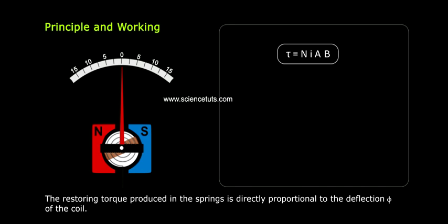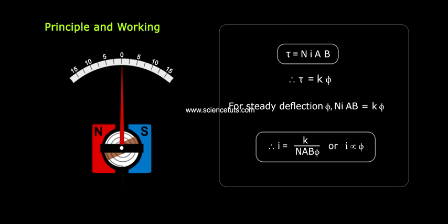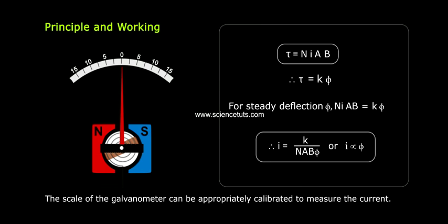The restoring torque produced in the springs is directly proportional to the deflection phi of the coil. Therefore, tau restoring equals k phi, where k stands for effective torsional constant of the springs. For steady deflection phi, NIAB equals k phi. Therefore, I equals k by NAB phi, or I is directly proportional to phi. The scale of the galvanometer can be appropriately calibrated to measure the current.